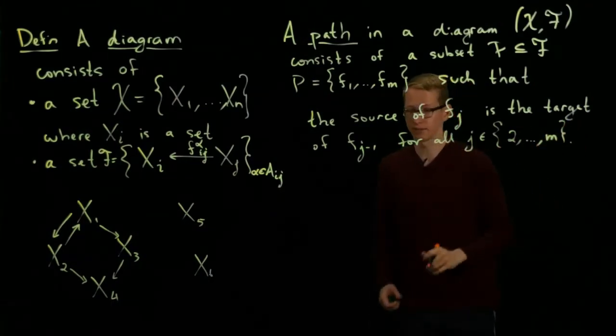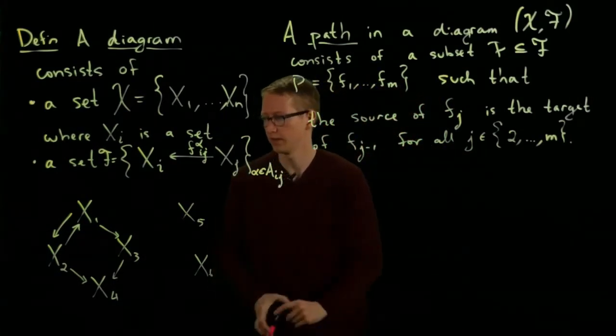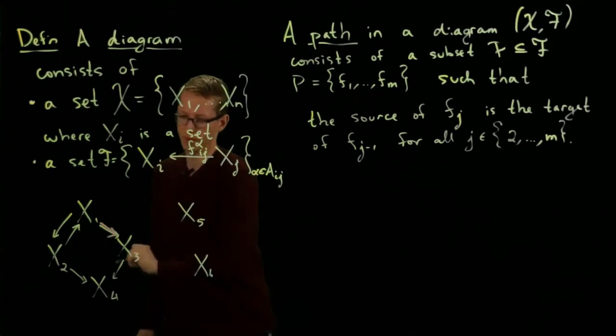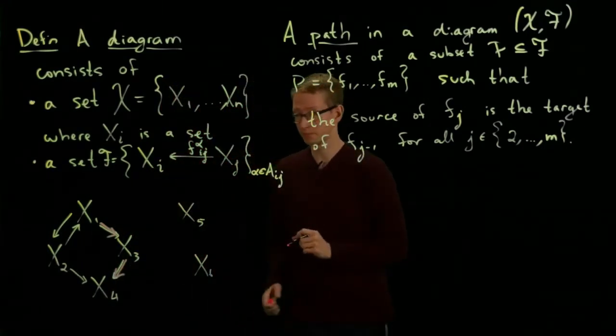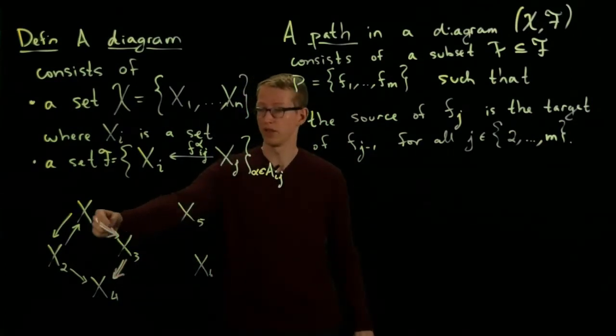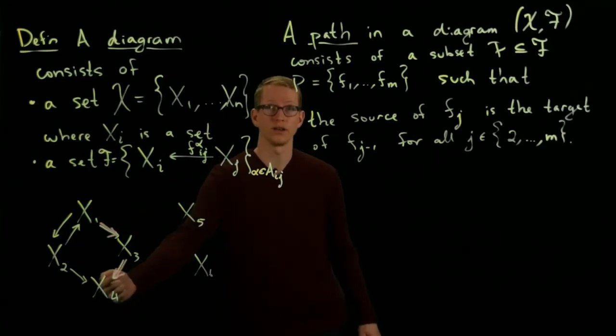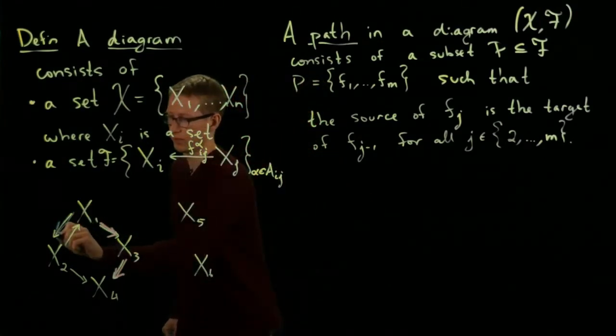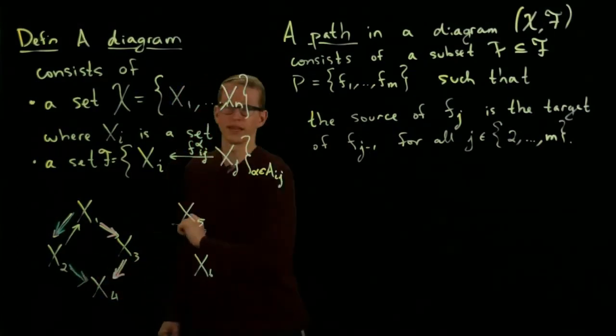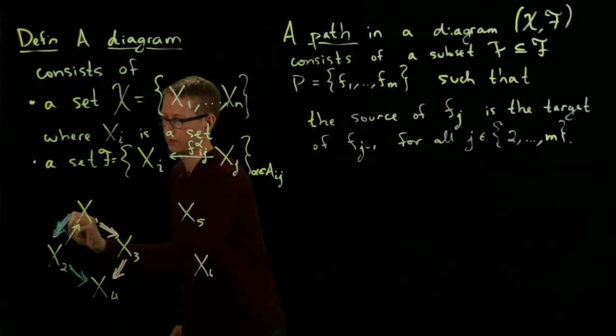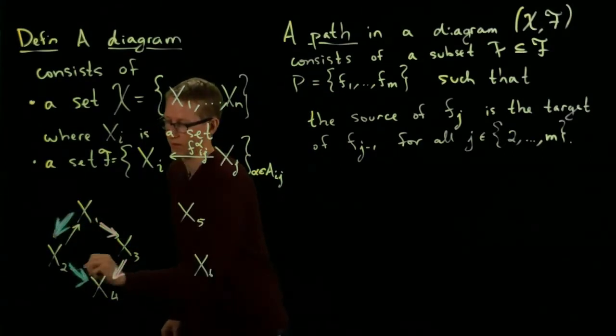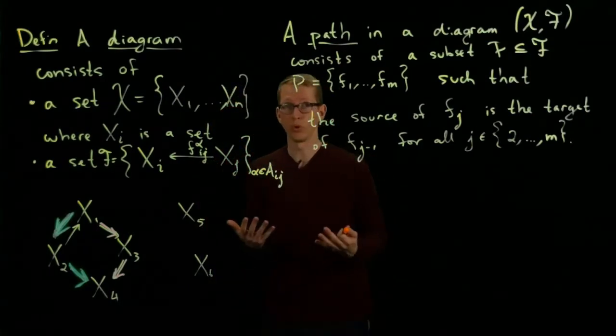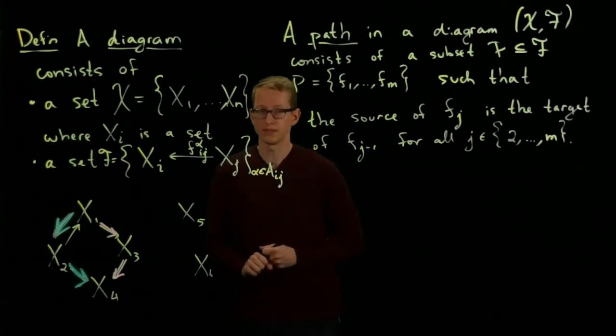Such that the source of Fj is the target of Fj minus 1 for all j from 2 up to m. So what does a path look like? One path, for instance, is the function from x1 to x3, and then the function from x3 to x4. That's an example of a path, because the target of the first arrow is the source of this second one. Another example of a path is the one from x1 to x2 to x4.